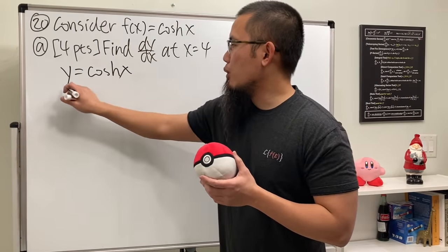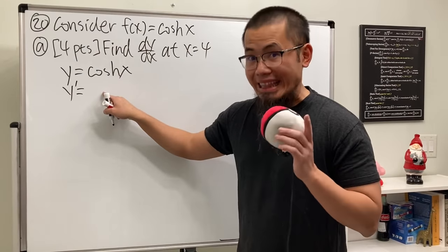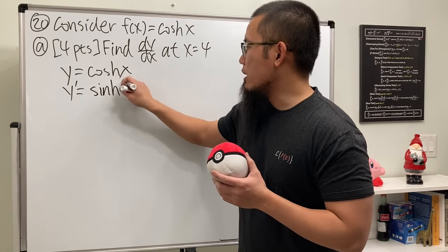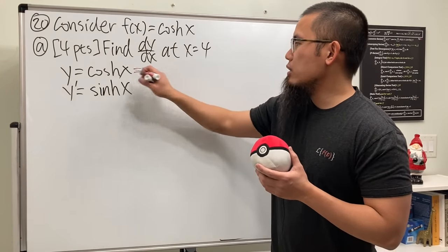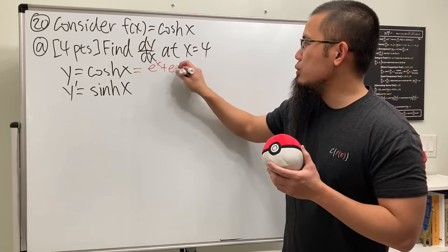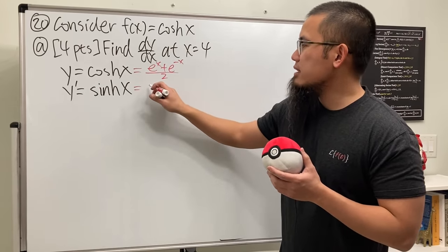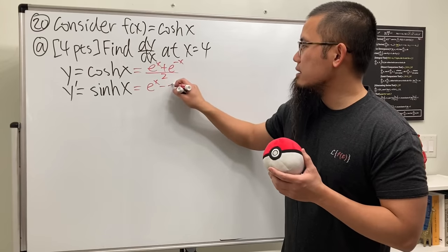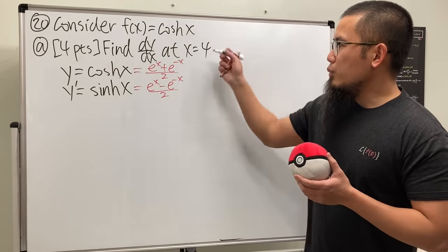They can just do that, or if they would like, you could write this down as e^x plus e^(-x) over 2, and then differentiate that and you get e^x minus e^(-x) over 2, up to them.